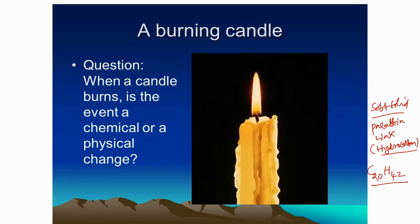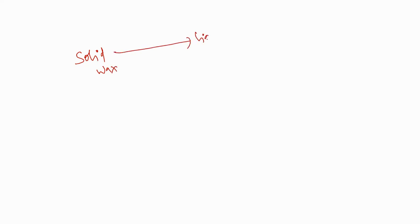When you observe the candle structure, you will see a soft solid, and in the middle of that soft solid there is a wick. When you light the wick, automatically the candle will burn. When a candle burns, the solid wax converts into liquid wax on heating.